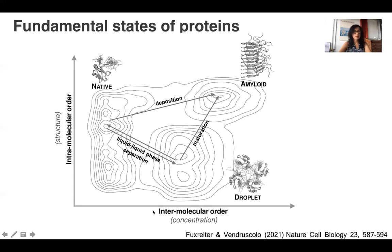At low concentration, the native state is separated by a high barrier from the condensed states, which would be generated by collective behavior. In contrast, at high concentrations, these barriers for collective behavior become lower. Therefore, the condensed states become possible. The droplet state, and in particular the amyloid state, are thermodynamically more stable than the native state. And obviously, the droplet state can naturally convert into the amyloid state.